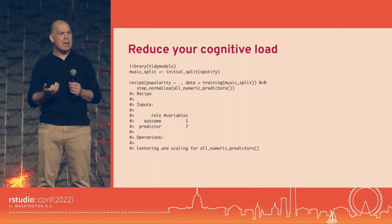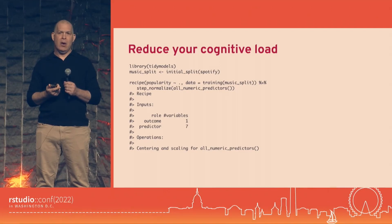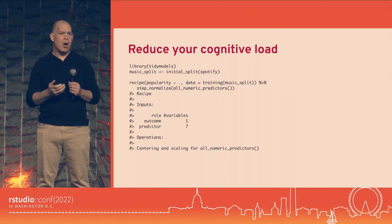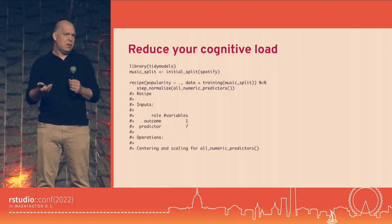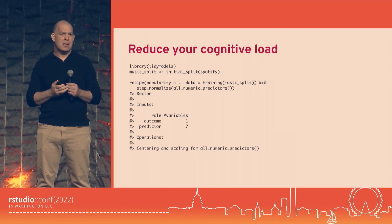From the modeling standpoint, when we make choices about these things, we're thinking about the type of role the variable is and its type. You wouldn't center and scale categorical data. So recipes provide many extra dplyr-style selectors to let you choose variables in a model-related context. For example, all_numeric_predictors() selects anything that is numeric and has a role of predictor.